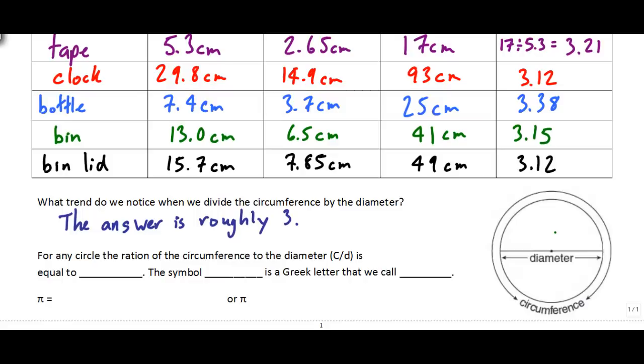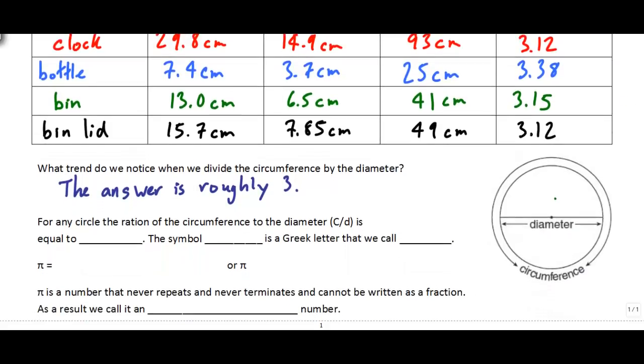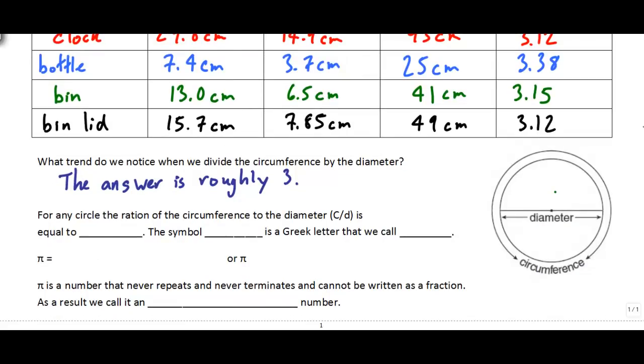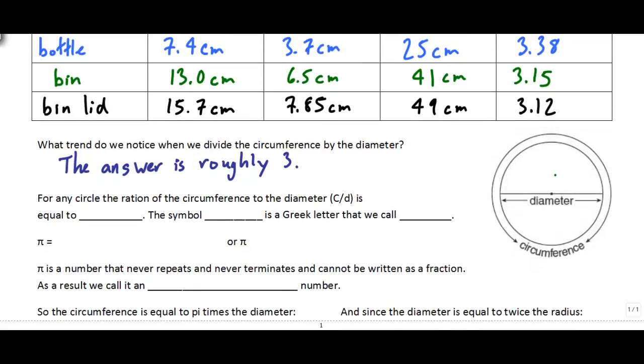Now this kind of amazed early mathematicians because they're pretty impressed that no matter how big the circle was, we would get the same ratio when we divided the circumference by the diameter. So for any circle, the ratio of the circumference to the diameter is equal to pi. And we use the symbol that looks kind of like this, it's kind of two lines and a squiggly line on top, and that's just the Greek symbol for pi.